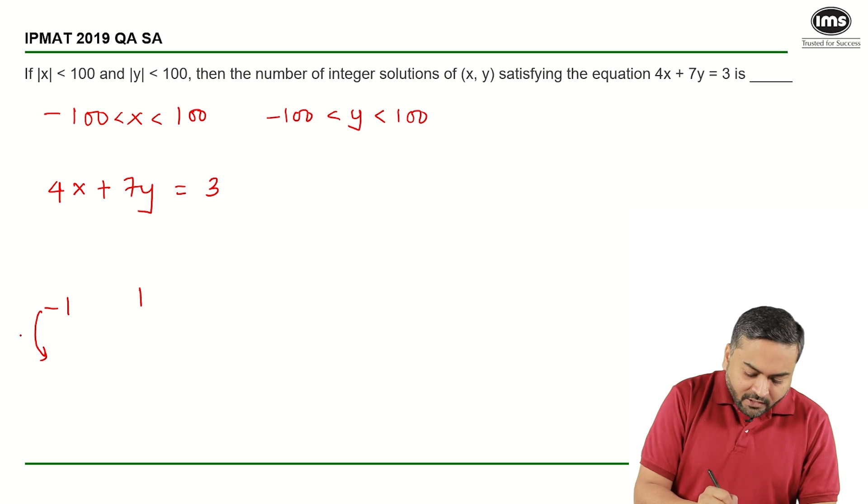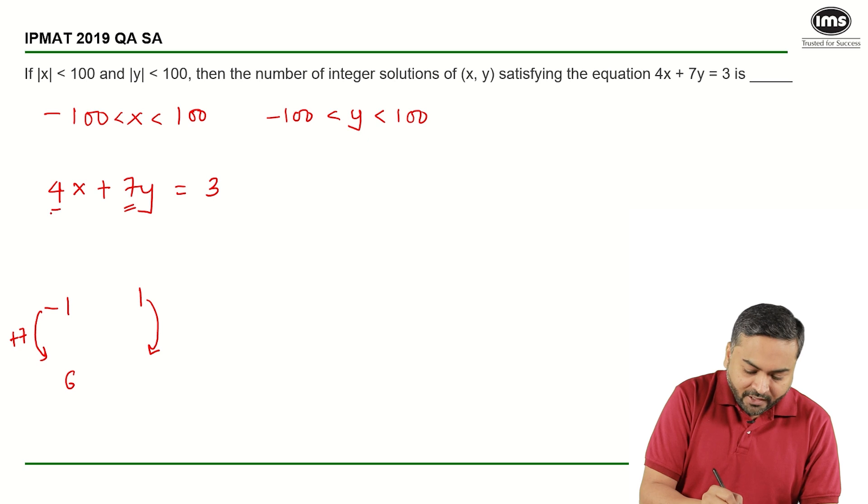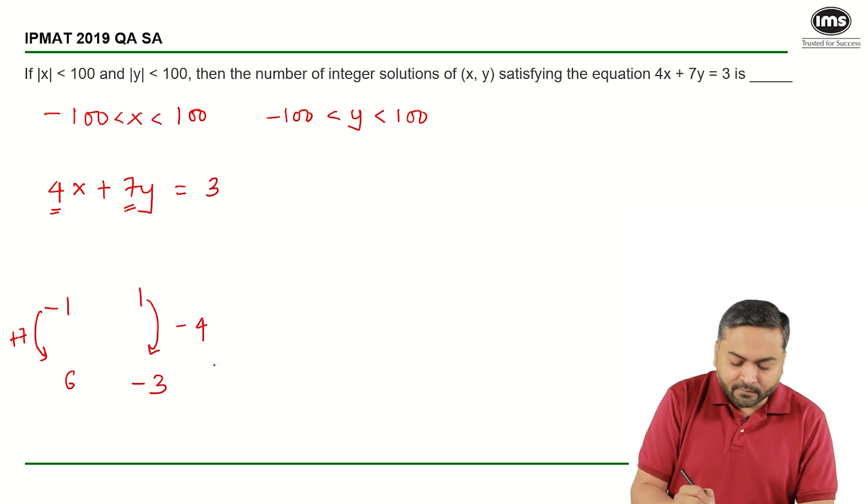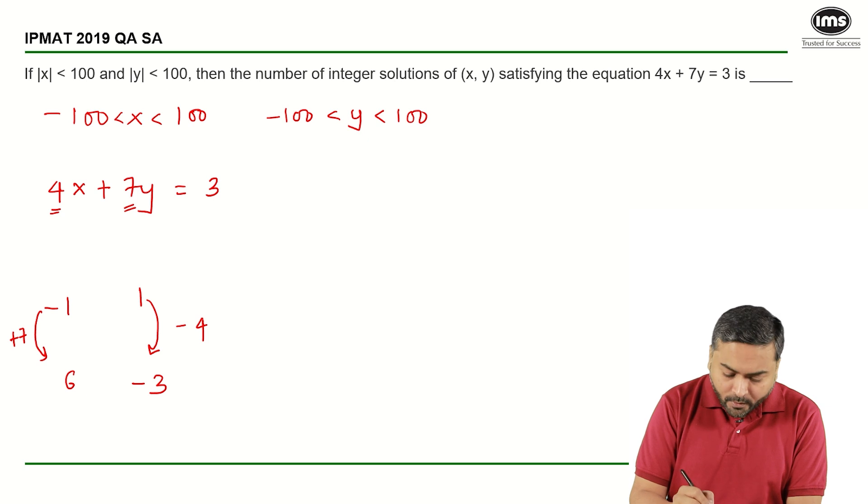Now, we know that if I increase the value of x by 7, that is coefficient of y. And if I decrease the value of y by the coefficient of x, that is by 4, I will get this minus 3. This will also satisfy the given equation.